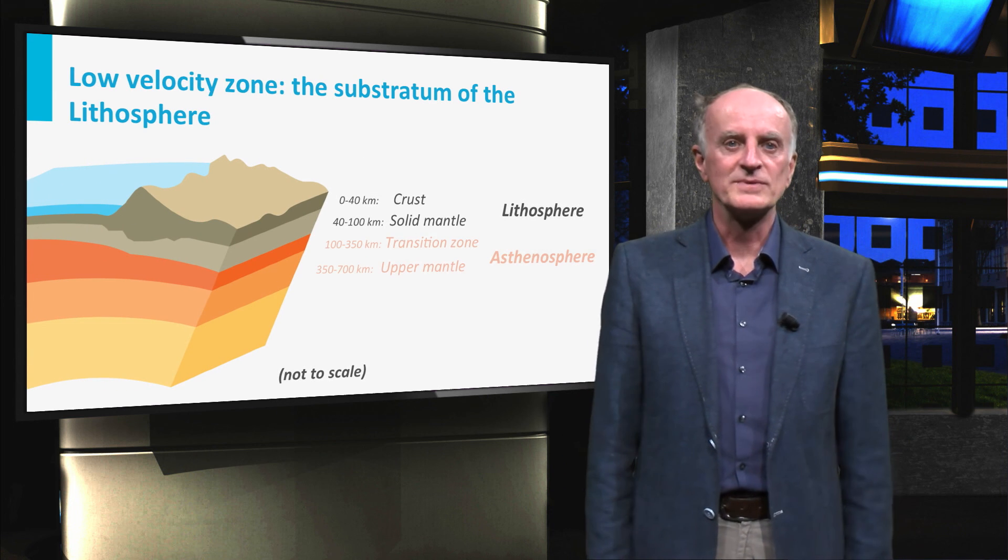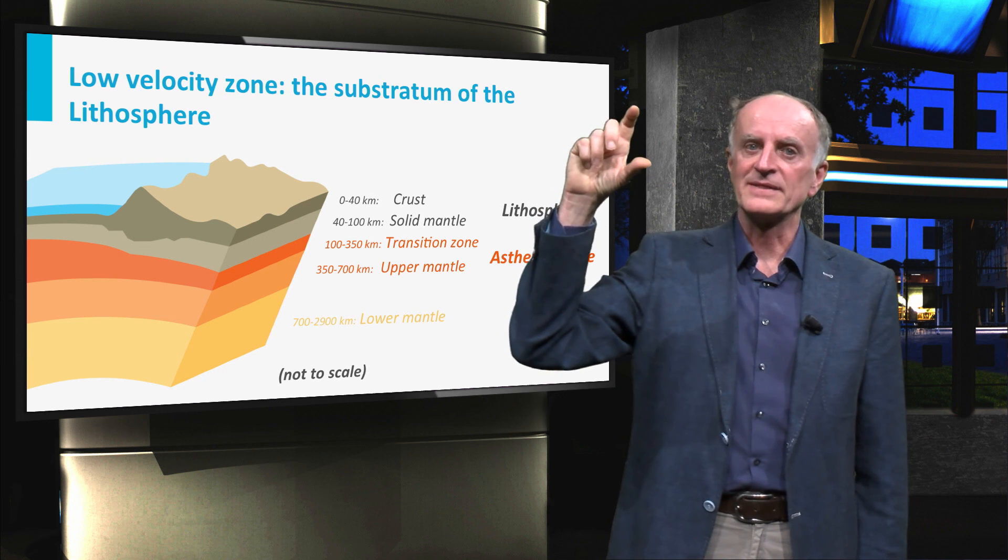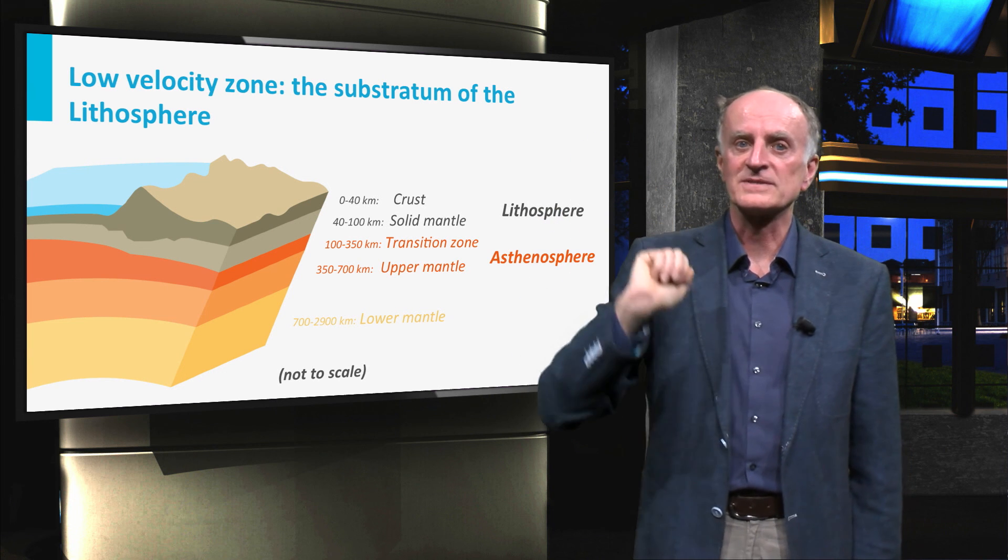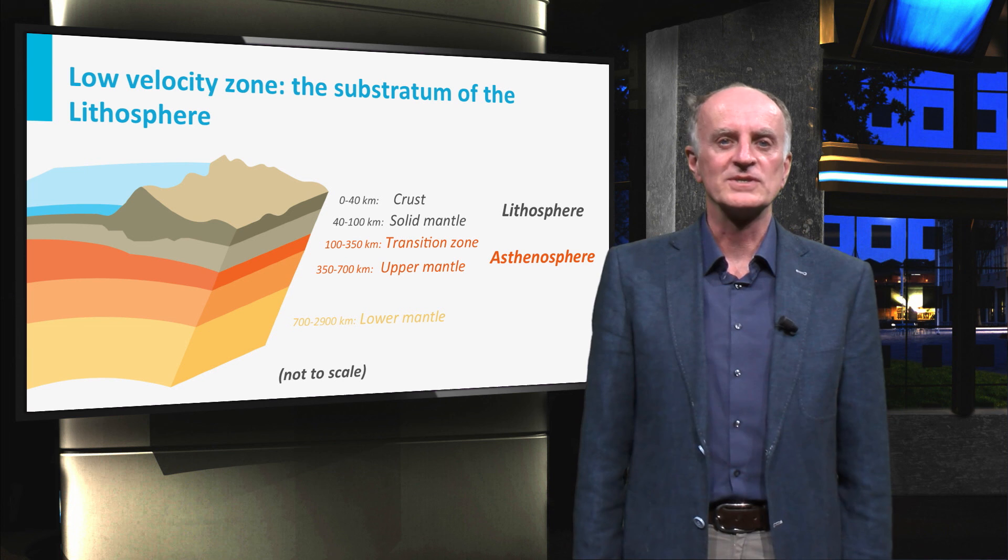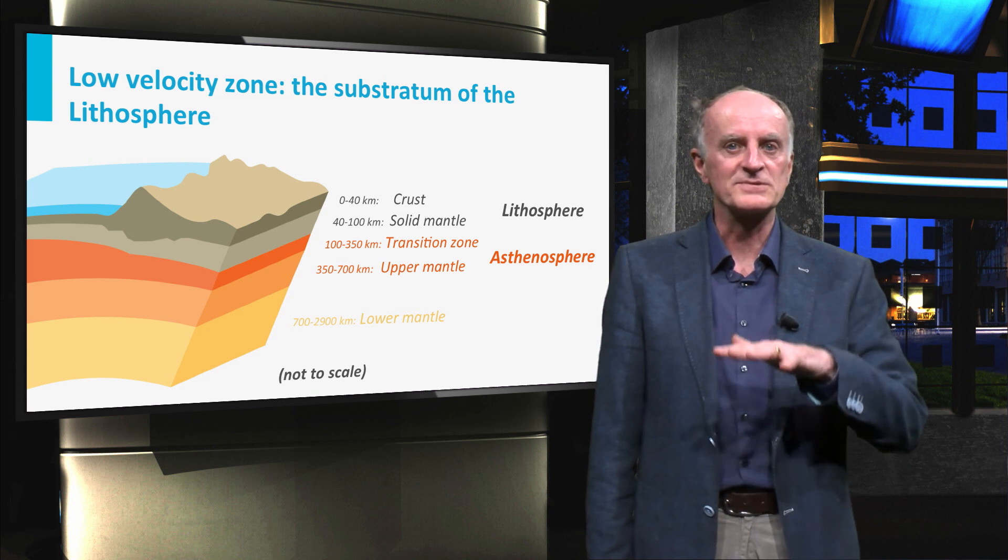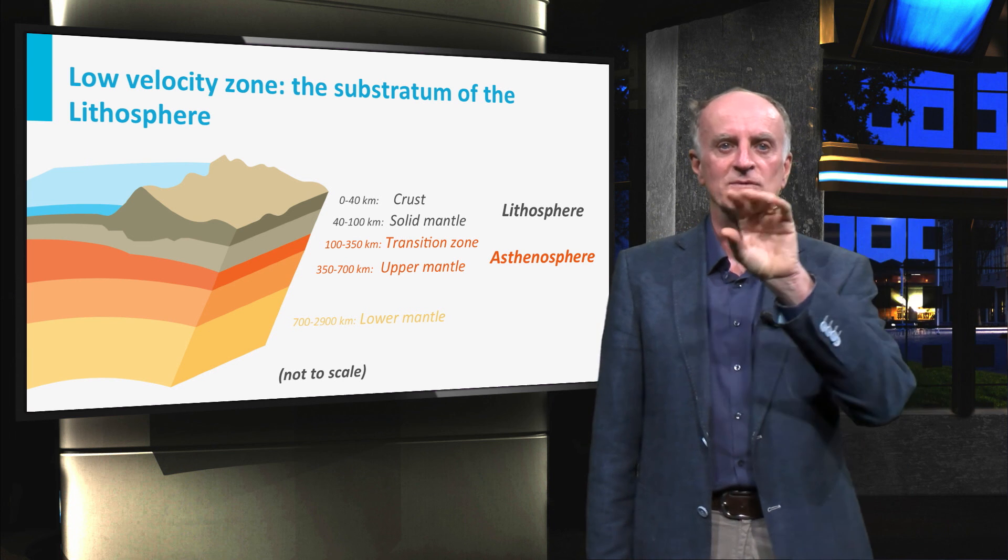The low velocity zone is called asthenosphere. The layer of rocks overlying the asthenosphere is called lithosphere. The asthenosphere is of great importance in geology as it forms a soft substratum on which the strong lithosphere floats and moves.